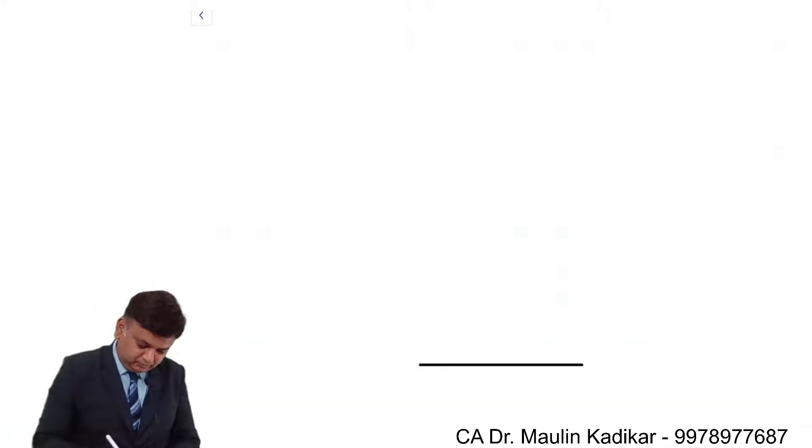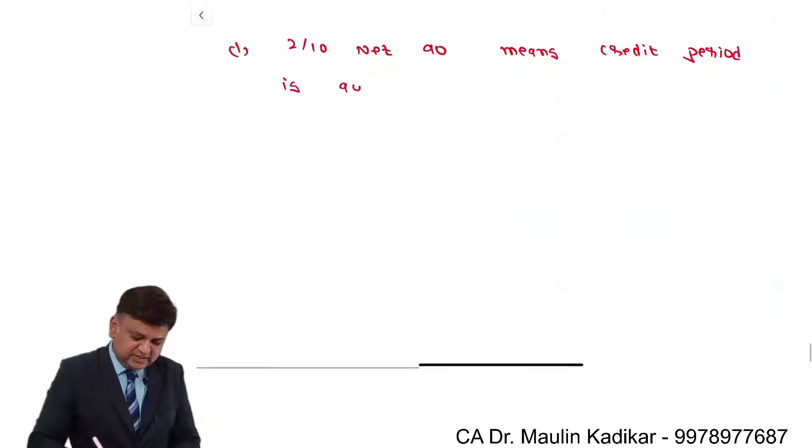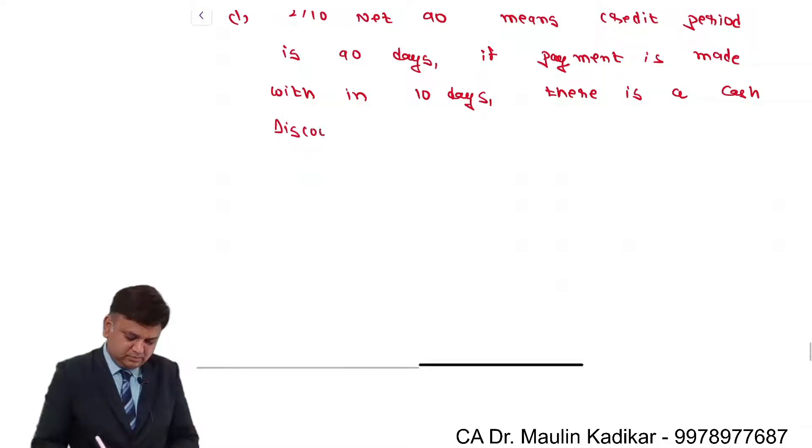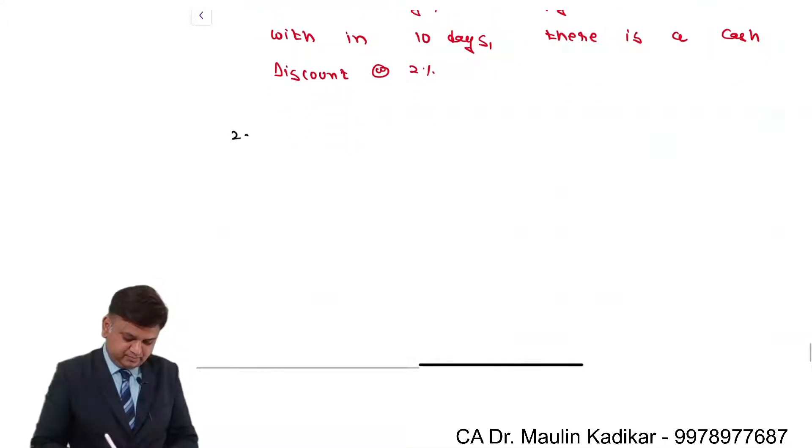Write an answer for the question. First point: 2/10 net 90 means credit period is 90 days. If payment is made within 10 days, there is a cash discount at the rate of 2%.